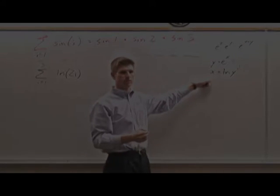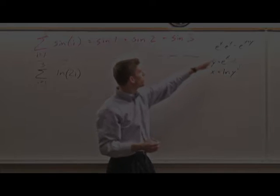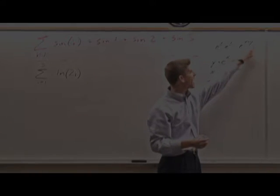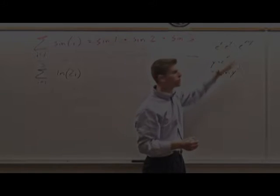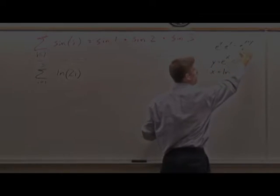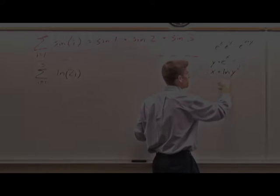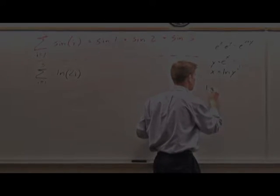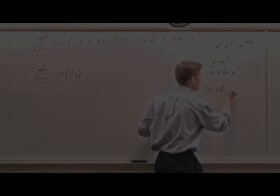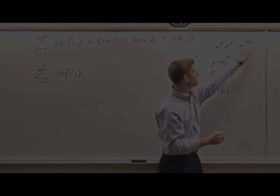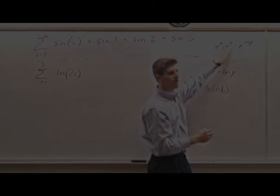Now, if this reverses inputs and outputs, then it shouldn't be too shocking. Here you're adding the inputs and you're multiplying the outputs. So, what happens if you multiply the inputs down here? What if you have a natural log of, let's say, a times b. If I'm adding the inputs here, I multiply the outputs.